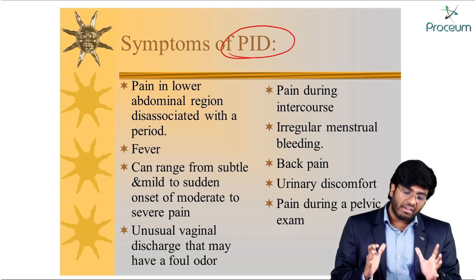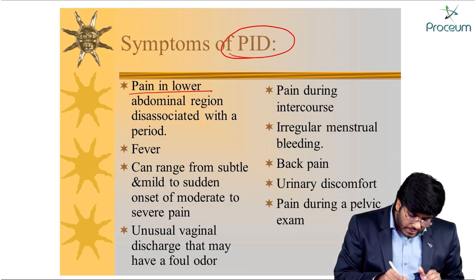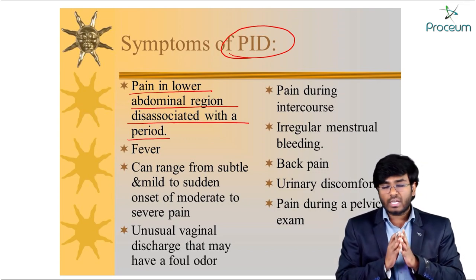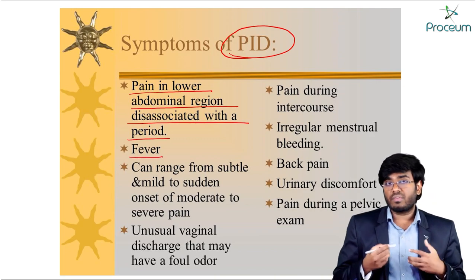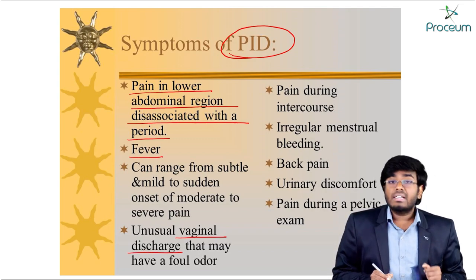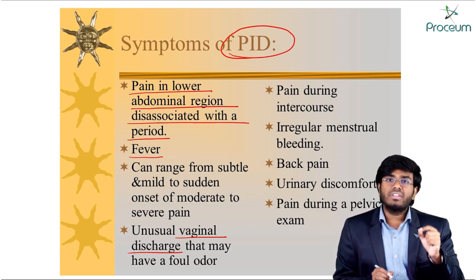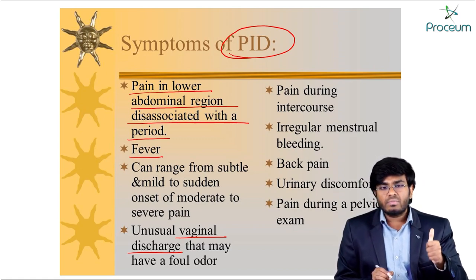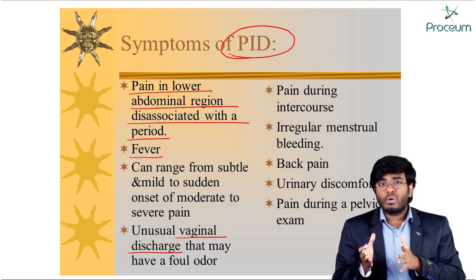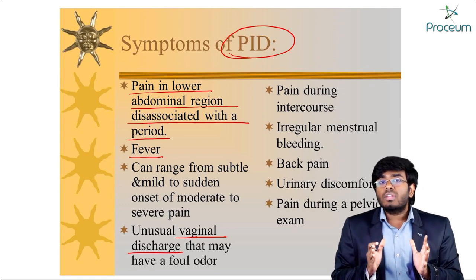Symptoms of PID include: lower abdominal pain dissociated from the menstrual period (continuous pain), fever due to ongoing infection, leukocytosis on laboratory results, and vaginal discharge. Just as bacterial vaginosis presents with creamy dirty-white discharge, candidiasis with white curdy discharge, and trichomoniasis with yellow-greenish discharge, PID due to Chlamydia and Gonococci also presents with a foul-odored discharge.